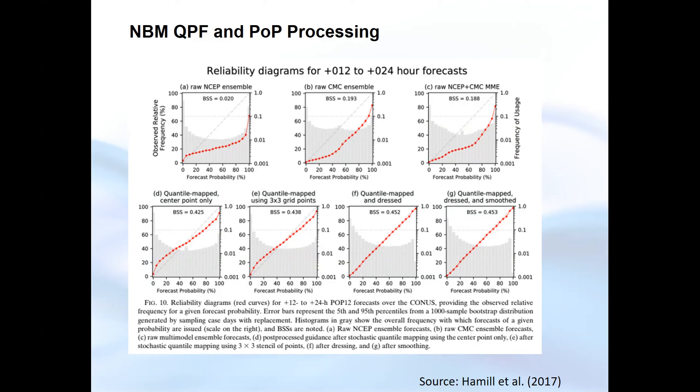Adding successive post-processing steps takes us from a raw ensemble with poor skill to a combined, quantile-mapped result that is quite skillful and extremely reliable. This illustrates why we want to leverage ensembles intelligently — applying the best post-processing using the best possible analyses to get a really good forecast.